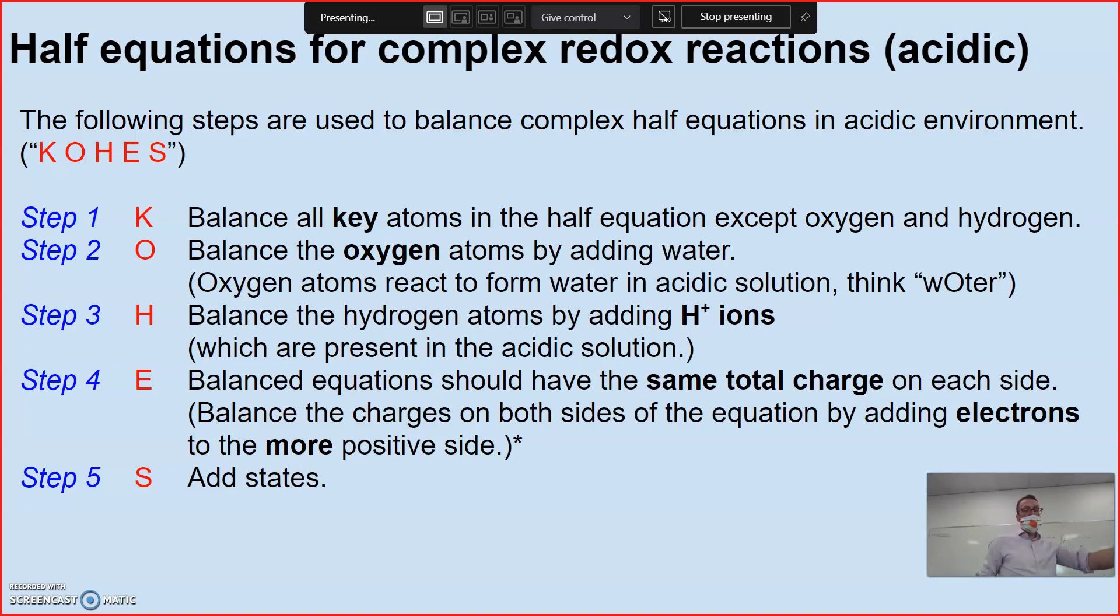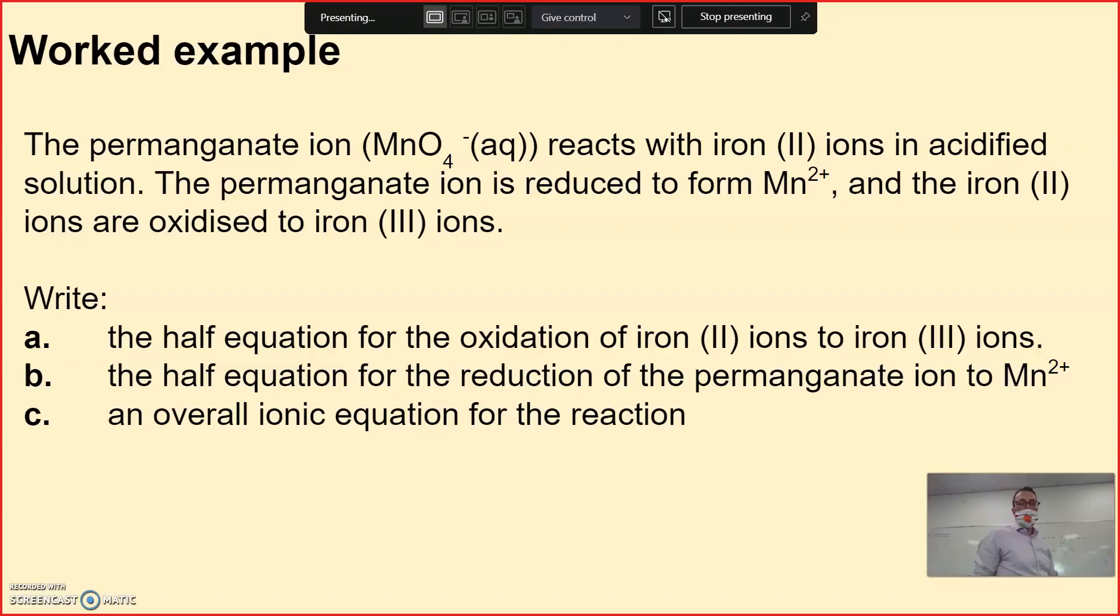So when I think COHES, I'm thinking acidic solutions only. What does it stand for? Key element. We balance oxygens by adding water to the appropriate side. We balance hydrogen by adding hydrogen ions. Then we balance the charge by adding the appropriate number of electrons. Then we add states. A common mistake is adding the same number of electrons as hydrogens. That's not always going to be the case. So just take a moment to pause after you balance the hydrogens before you just throw in the electrons.